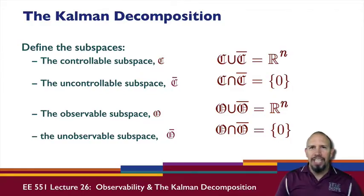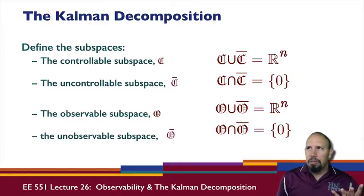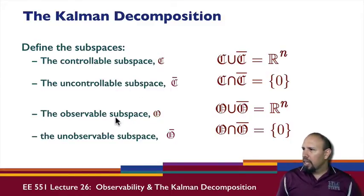We're talking about the Kalman decomposition. In the Kalman decomposition, we have four subspaces. We have the controllable subspace C, and the uncontrollable subspace, which is the complement of that. We have the observable subspace O, and the unobservable subspace O bar.